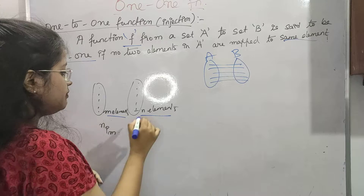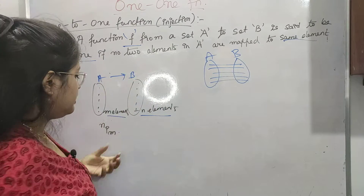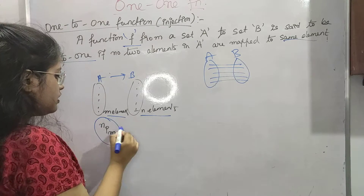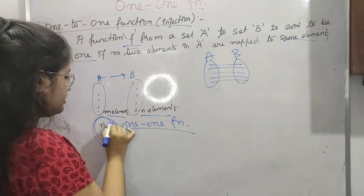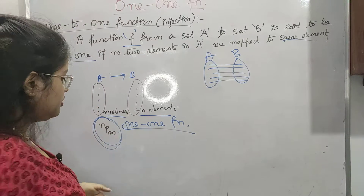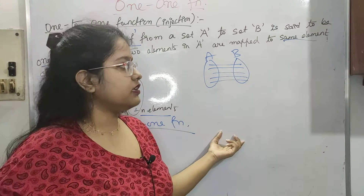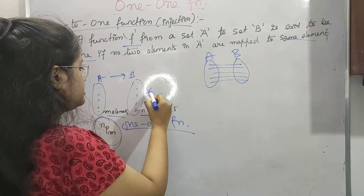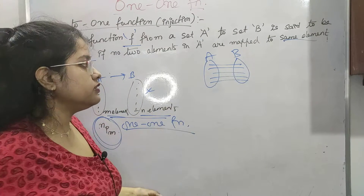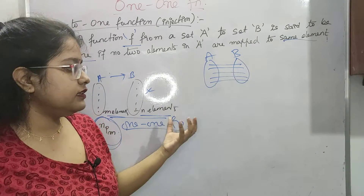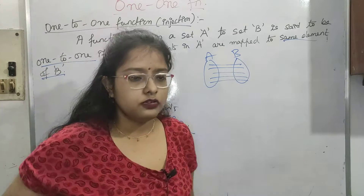So set A contains M elements and set B contains N elements, and the function is from A to B. The number of one-to-one functions possible is N permutation M, i.e., N P M. Try to remember this notation of M and N because we will use it continuously so that you can visualize which formula is used where. Now let's continue with onto functions.